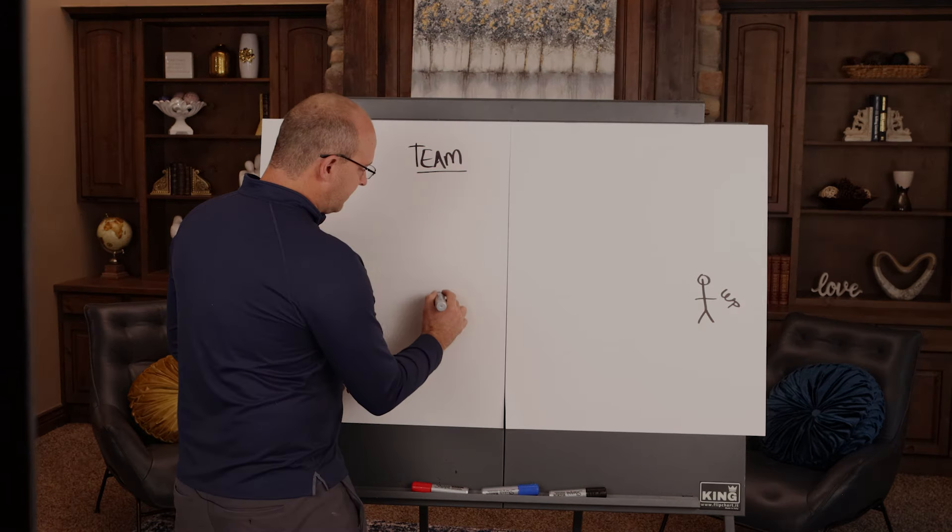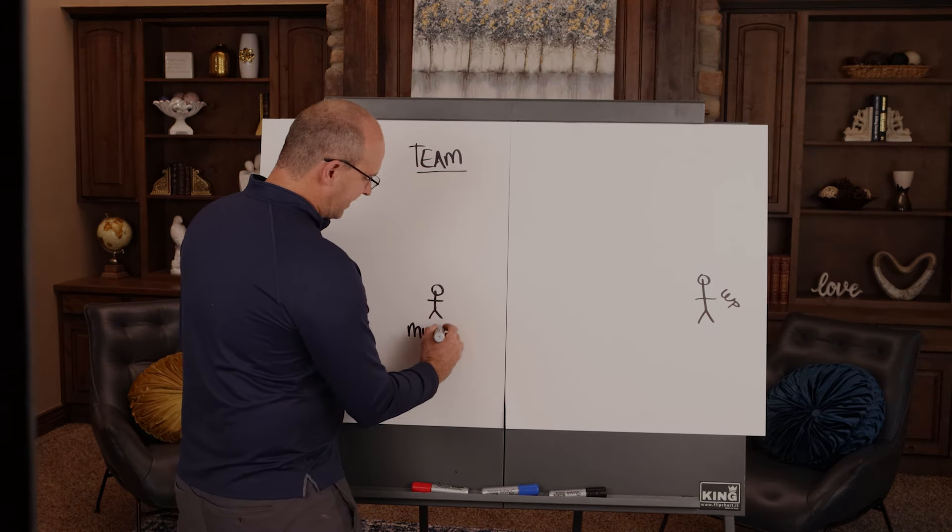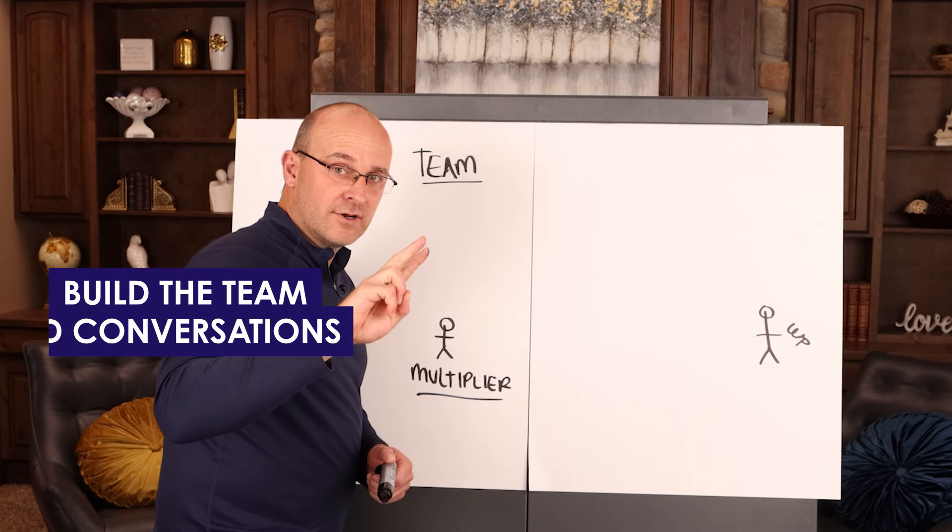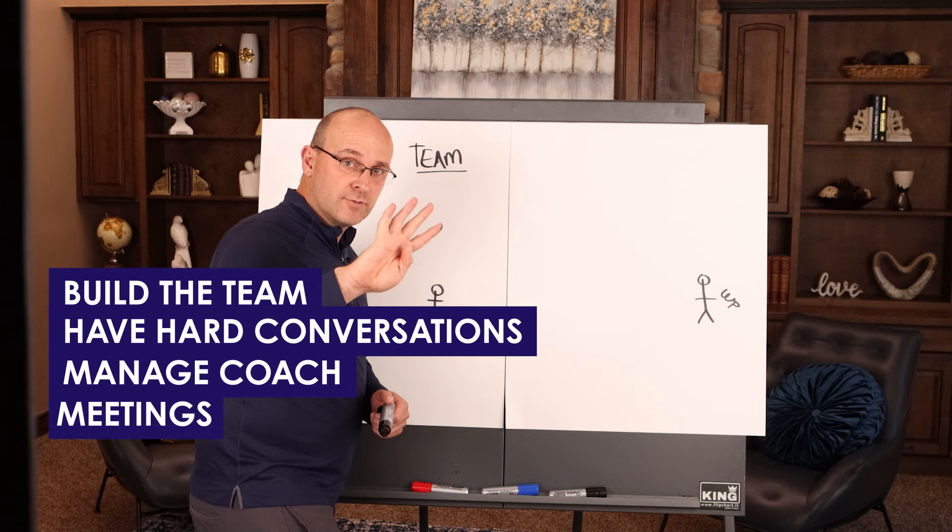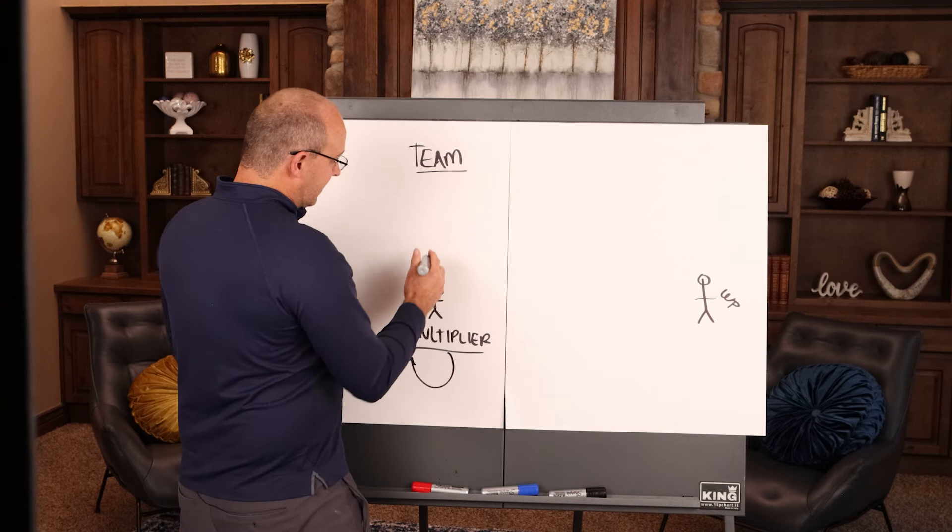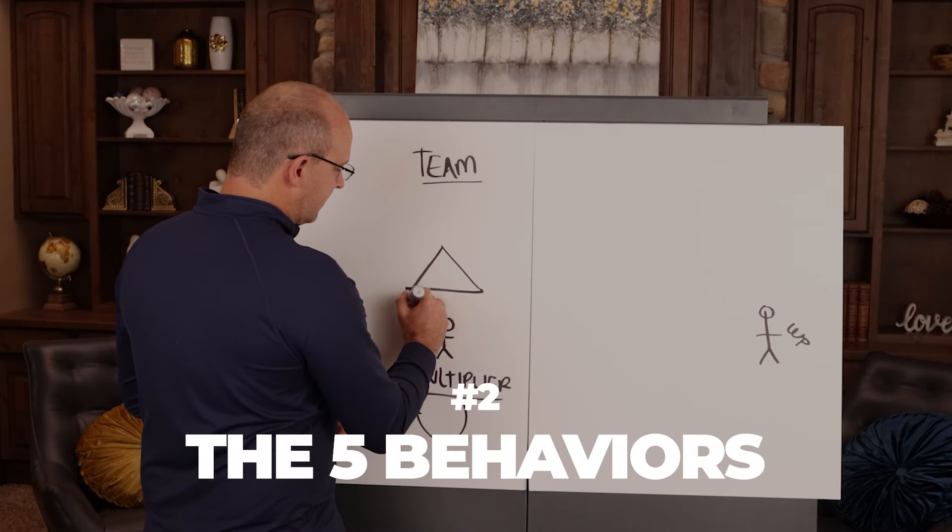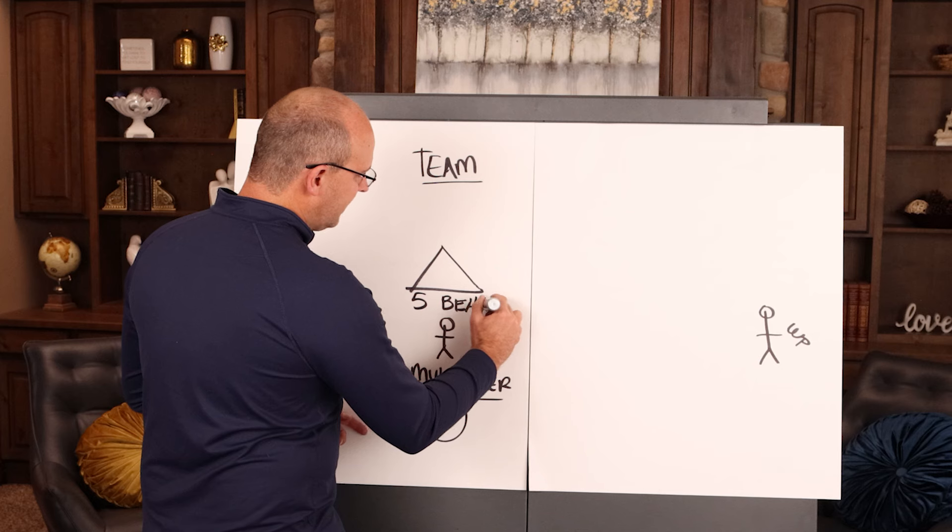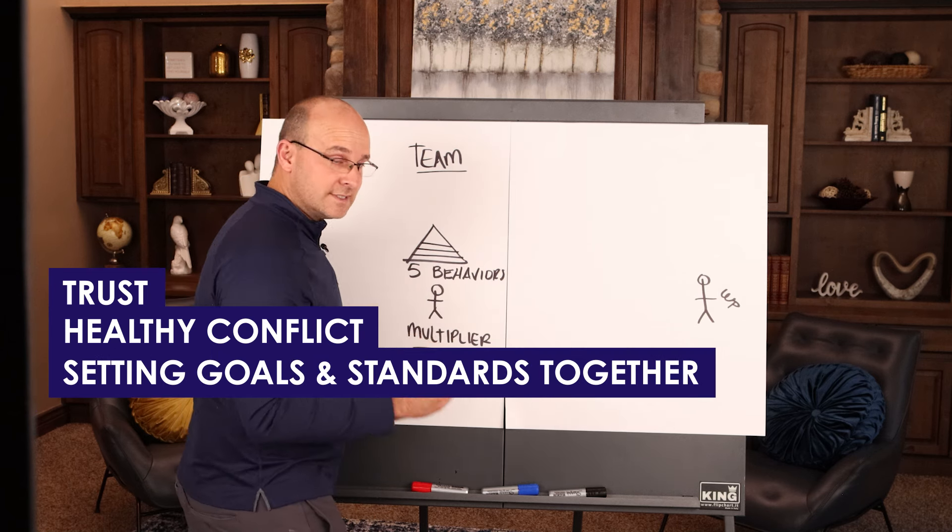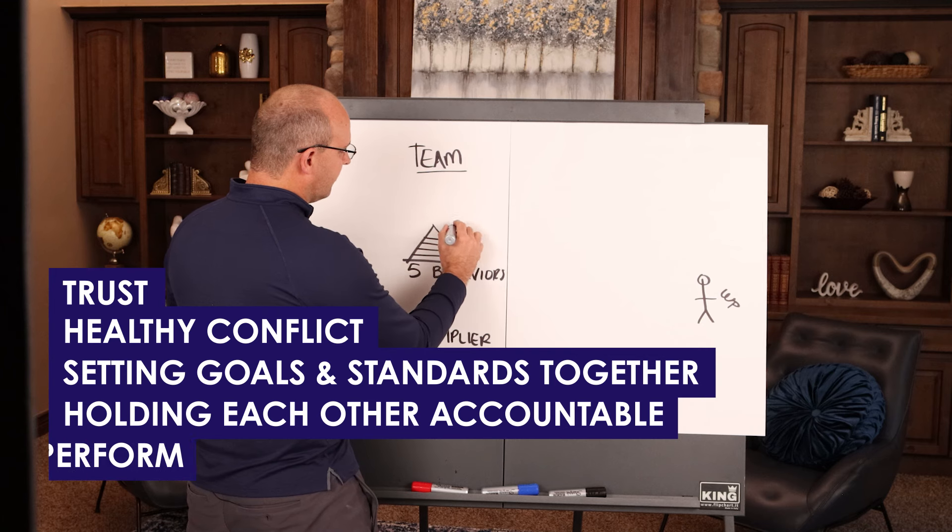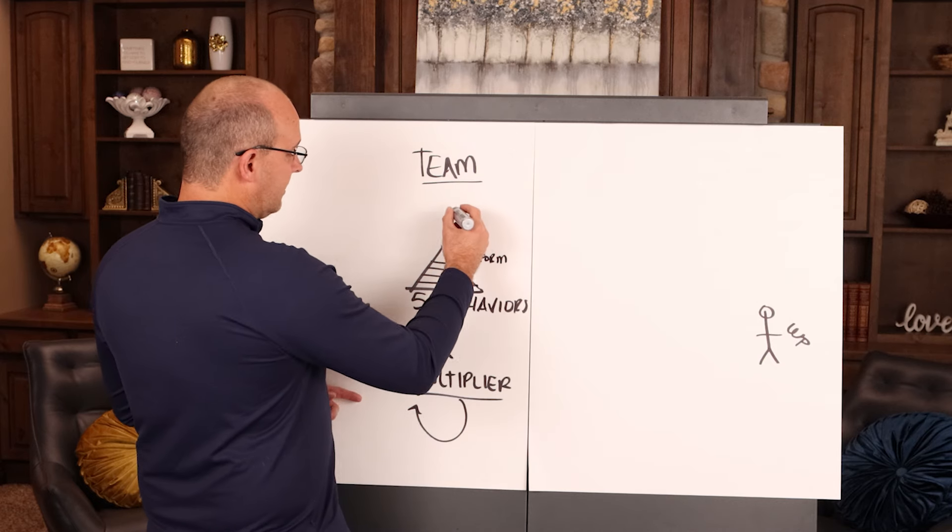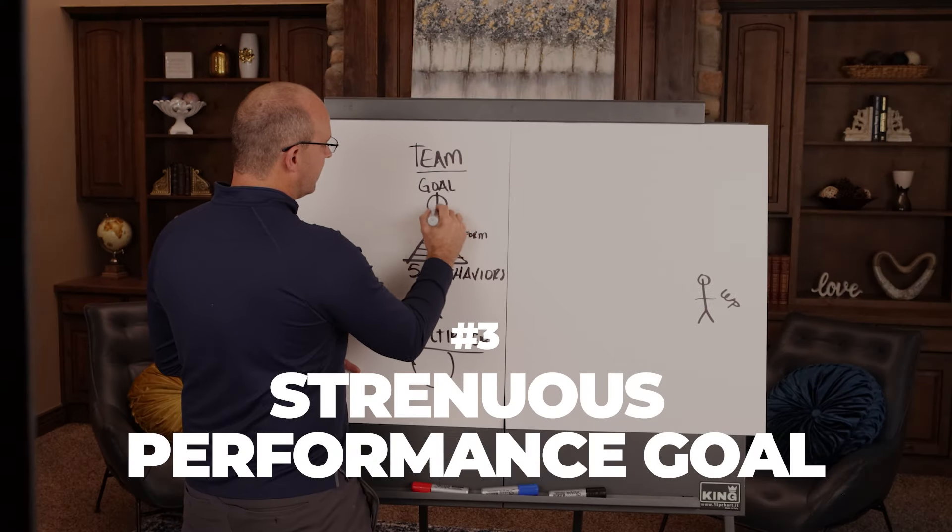Number one, you've got to have a multiplier leader. This leader will do five key things: build the team, have hard conversations, manage, coach, lead and mentor direct reports, hold remarkable meetings, and scale clarity. So this multiplier leader will support the team with everything it needs. The team will behave with the five behaviors: number one, trust; number two, healthy conflict; number three, setting goals and standards together; number four, holding each other accountable; and number five, perform. That means the team is actually working like a team with the support of the multiplier leader. And then at the top you have a goal or a target.